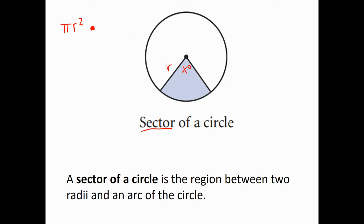This angle, we know the circle has 360 degrees, so this angle represents some fraction of the circle, some percentage. So if we found that percentage and multiplied it by the total area, it would just give us this little slice called a sector. So that's going to be our formula for the sector of a circle.